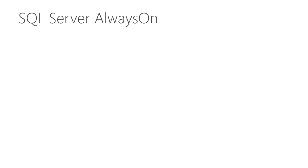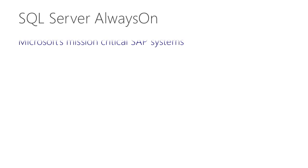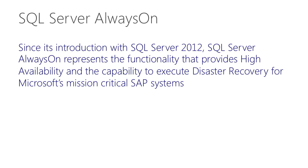Another area Microsoft IT is interested in are the improvements that come with SQL Server 2016 for Always On functionality. Since its introduction in SQL Server 2012, Microsoft IT has been leveraging Always On as the most important functionality to provide high availability and disaster recovery for SAP applications. Microsoft IT even tested this functionality before SQL Server 2012 was released and brought a lot of feedback to development over the last four years.